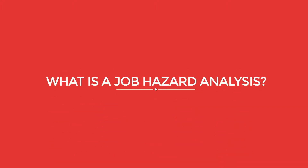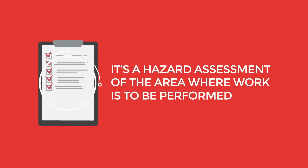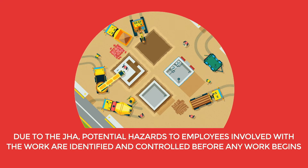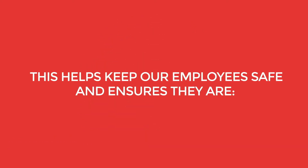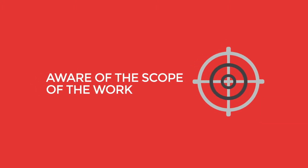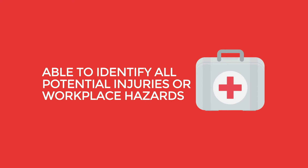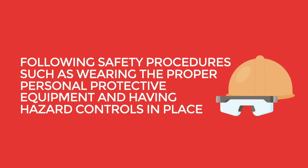So, what is a Job Hazard Analysis? Simply put, it's a hazard assessment of the area where work is to be performed. Due to the JHA, potential hazards to employees involved with the work are identified and controlled before any work begins. This helps keep our employees safe and ensures they are aware of the scope of the work, able to identify all potential injuries or workplace hazards, following safety procedures such as wearing the proper personal protective equipment, and having hazard controls in place.